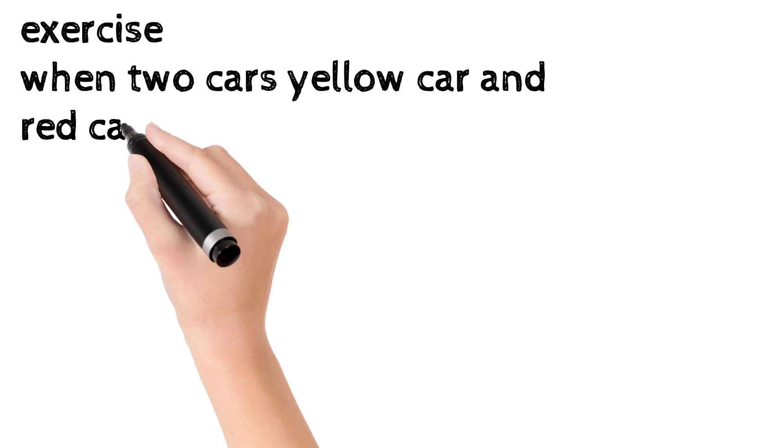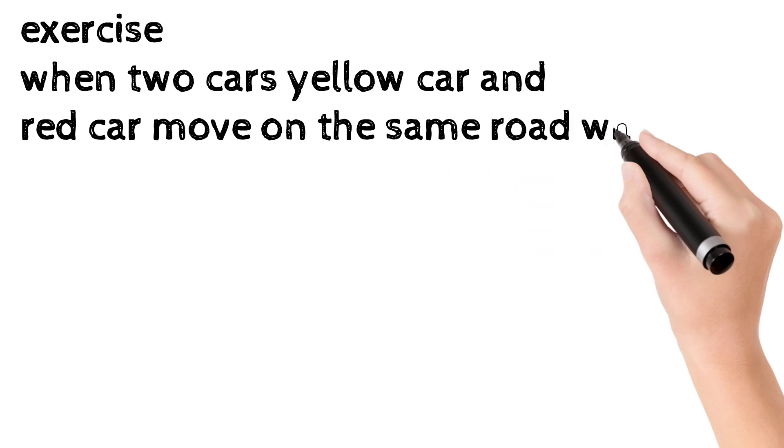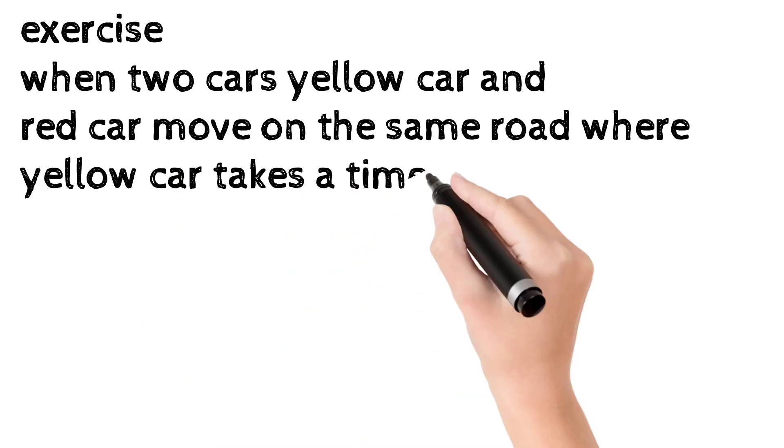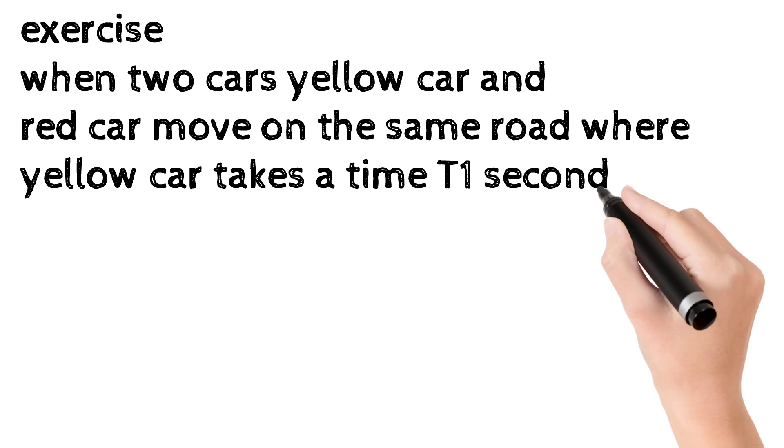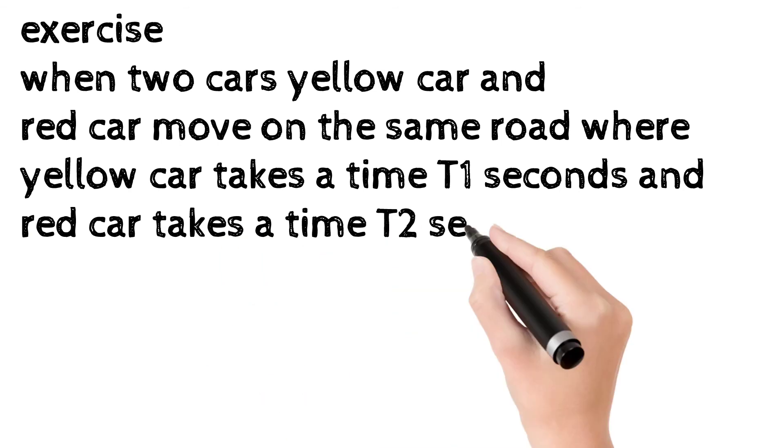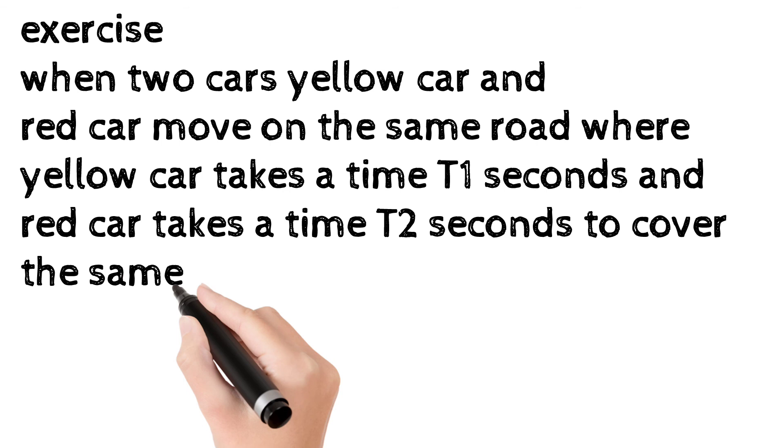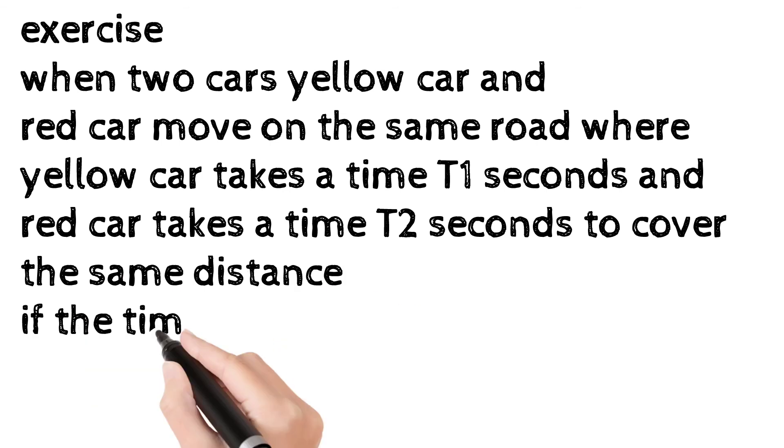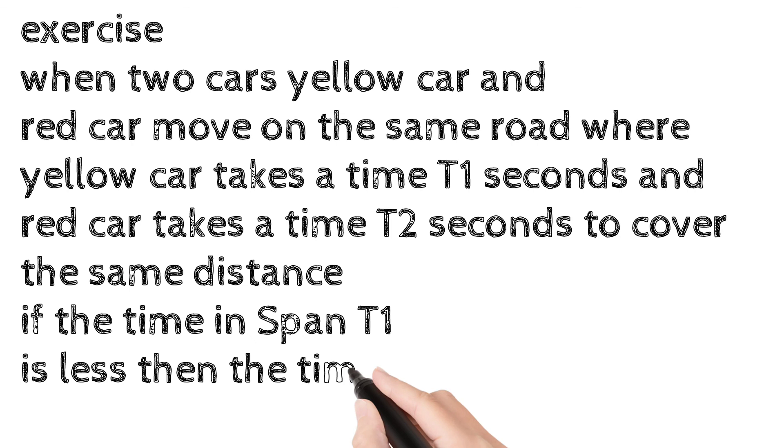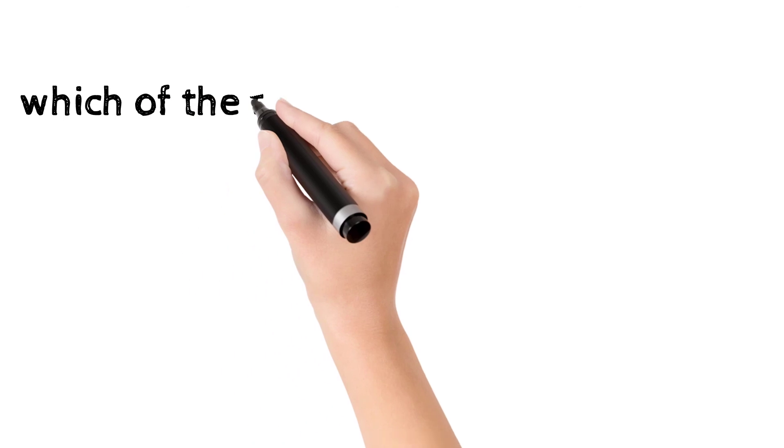Exercise. When two cars, yellow car and red car, move on the same route where yellow car takes a time T1 seconds and red car takes a time T2 seconds to cover the same distance. If the time T1 is less than the time T2, we can say the yellow car is faster than the red car because it takes a smaller time than the red car to cover the same distance.